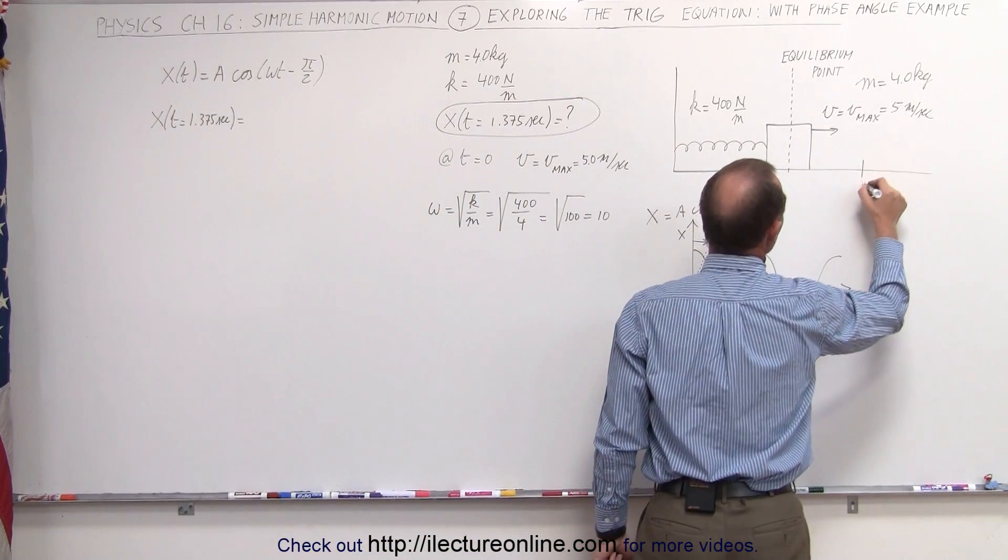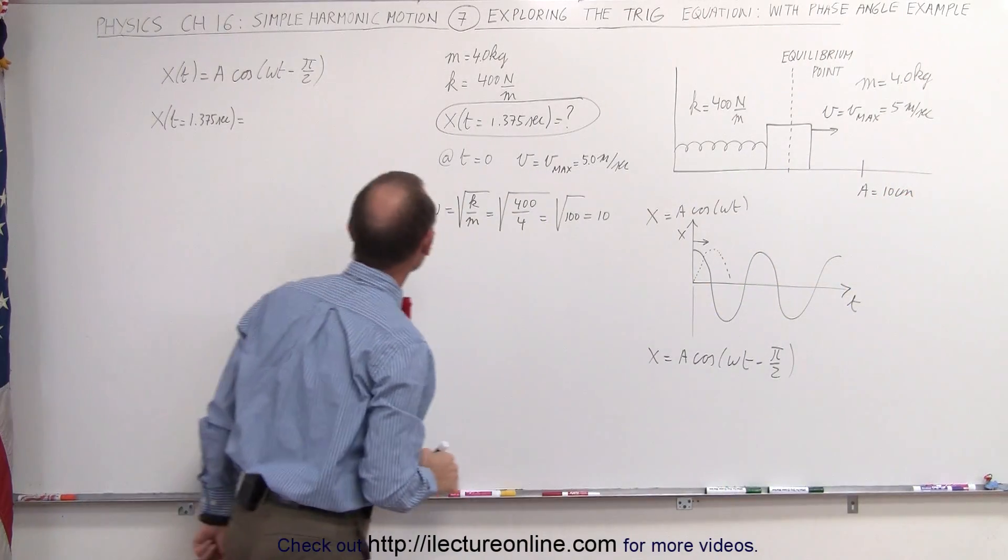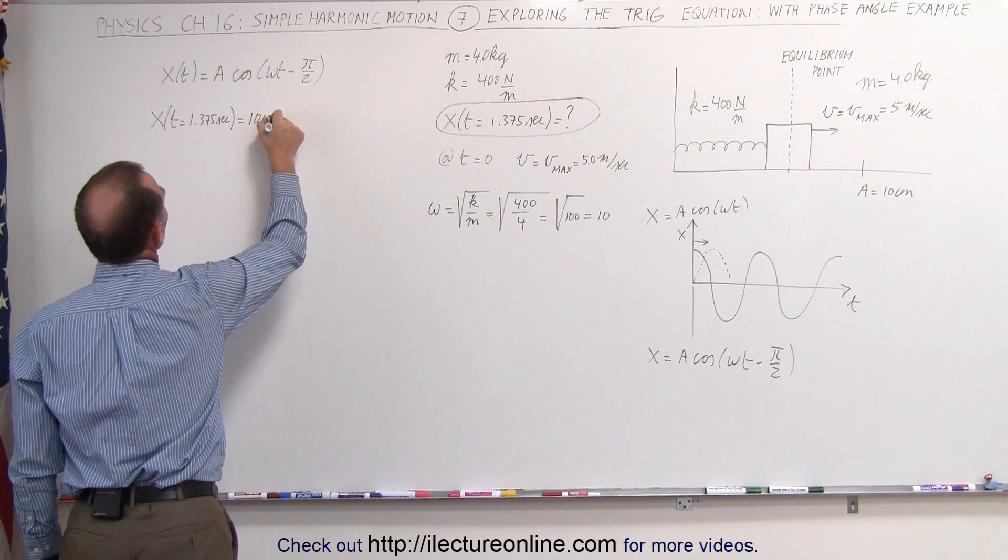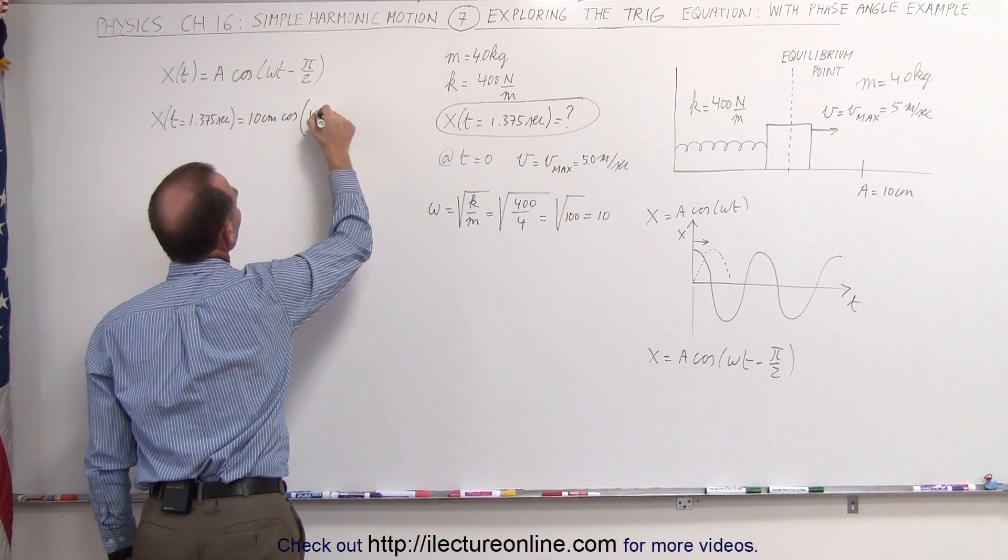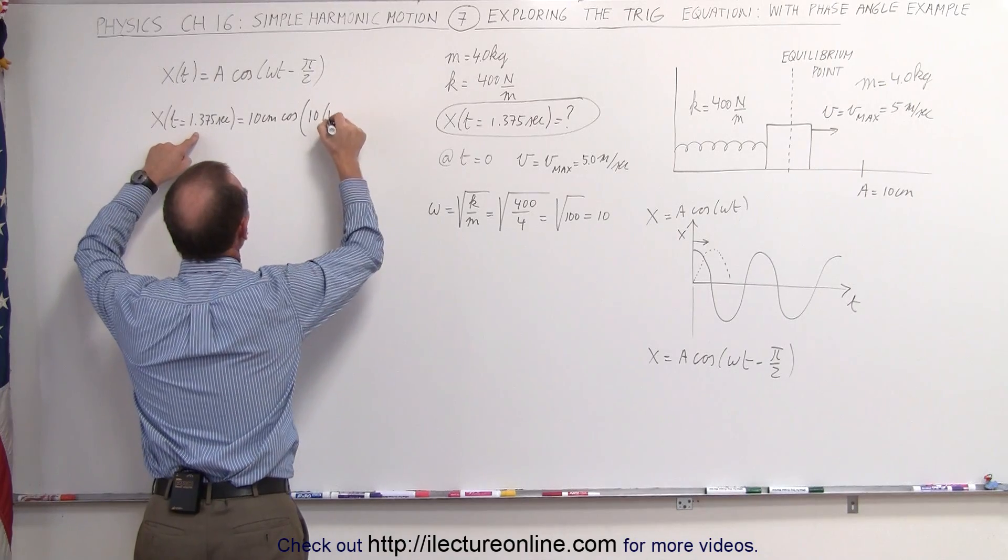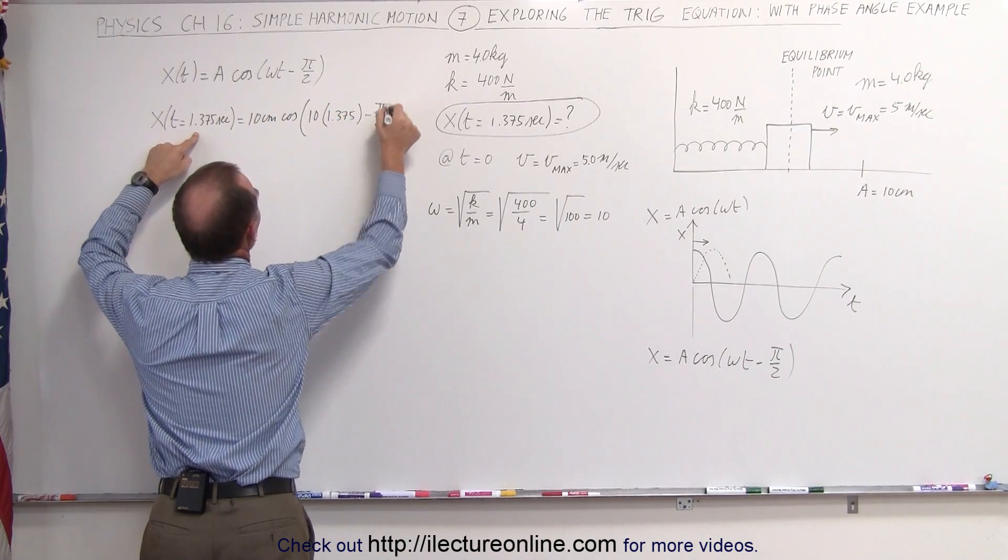Let's call A, the maximum amplitude to be 10 centimeters. We're going to need that in the equation here. That's equal to 10 centimeters times the cosine of omega which is 10 times the time, 1.375 seconds, minus pi divided by 2.